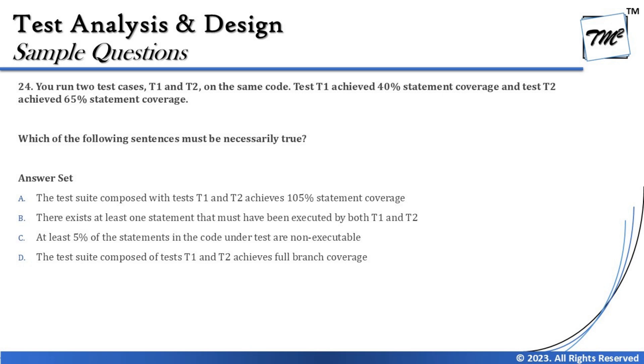Option A says the test suite composed of T1 and T2 achieves 105% statement coverage. That's a very hypothetical statement because at any cost, no matter how many tests you write, you will test 100% of statements at maximum. There is nothing called five percent extra — a code either gets covered or it doesn't, up to 100%. So option A does not make sense; the maximum possible is 100%.